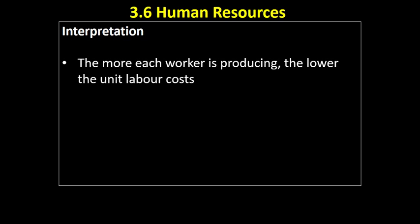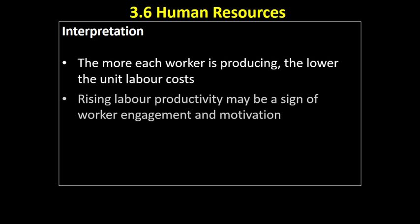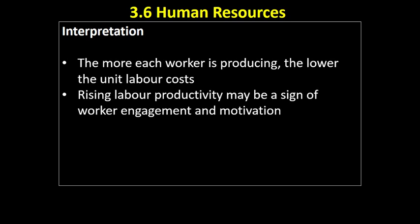the cost per unit of output goes from £1 to 66p because she's being paid the same amount but she's doing 50% more work, so it works out as cheaper per unit. So businesses often are looking for ways that they can improve labour productivity.